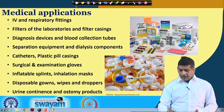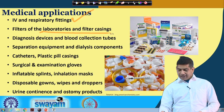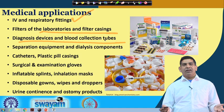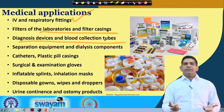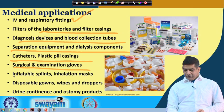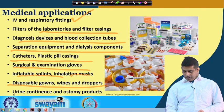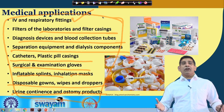We use a lot of plastic in medical applications. The list includes: IV and respiratory fittings, laboratory filters and filter casings, diagnosis devices, blood collection tubes — the container for blood or urine samples is plastic, and the syringe is also plastic. Also: separation equipment, dialysis components, catheters, plastic pill casings, surgical examination gloves, inflatable splints, inhalation masks, disposable gowns, wipes, droppers, urine containers, and ostomy products. You can see that lots of applications of plastic are being done in medical settings.